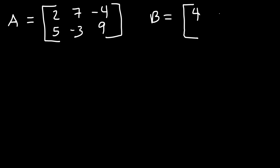Now let's work on another example. So let's say we have matrix A. It has the numbers 2, 7, -4, 5, -3, and 9. And matrix B is also going to be a 2 by 3 matrix. It's going to have two rows, three columns. So let's say it's 4, -6, 5, -2, 1, and 3.